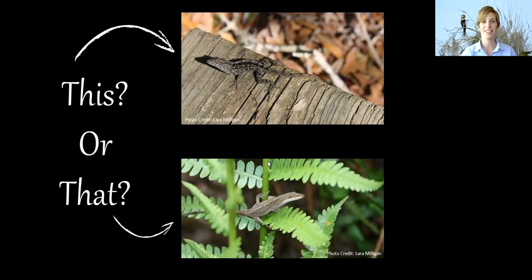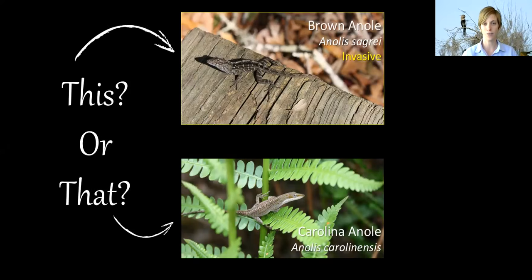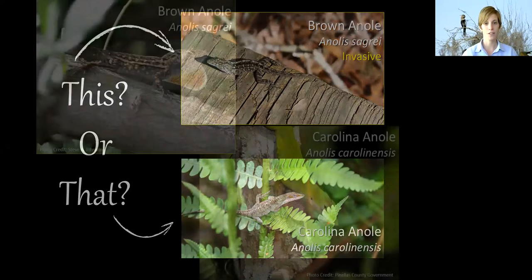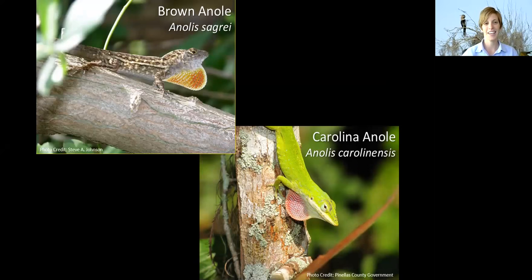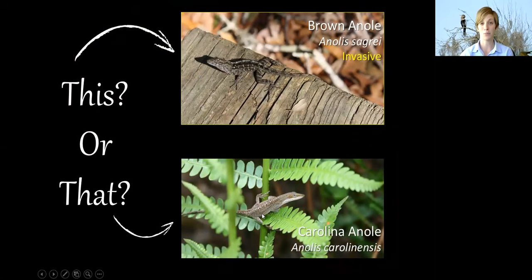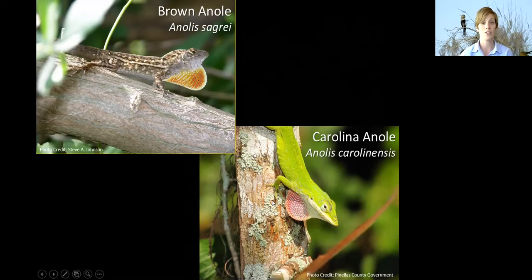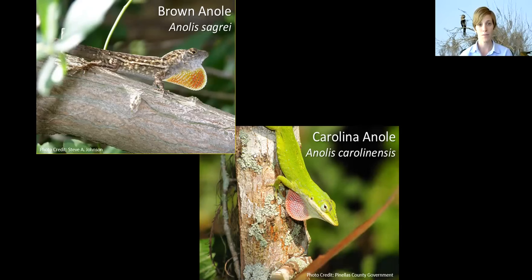Let's look at one other comparison involving an invasive species — one of my favorites. On the top we have the brown anole, also called the Cuban anole, and on the bottom the Carolina anole, sometimes called the green anole. The Carolina anole has the ability to change color — they can change color quite quickly — whereas the brown anole cannot. Brown anoles do come in different colors: some are very dark, some have diamond shapes on their back, some have stripes — but they're brown and cannot change green.